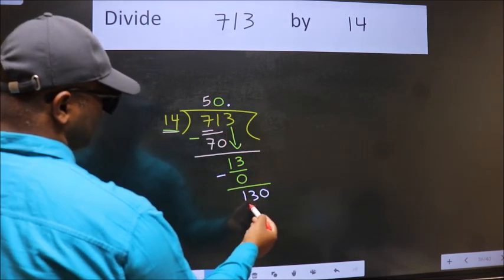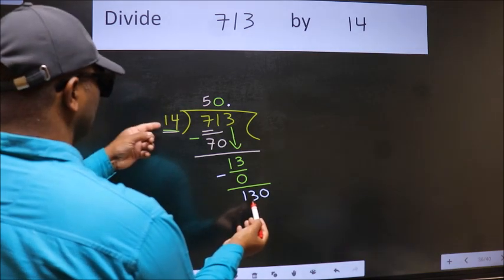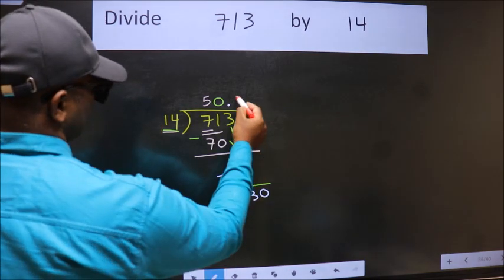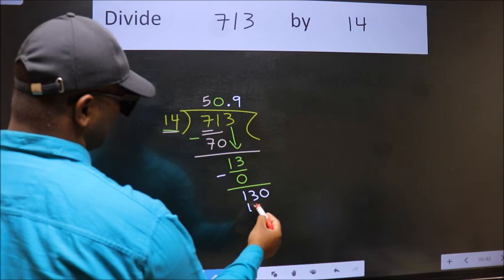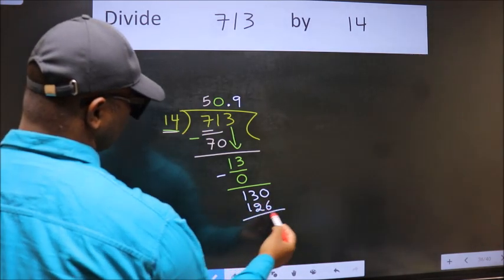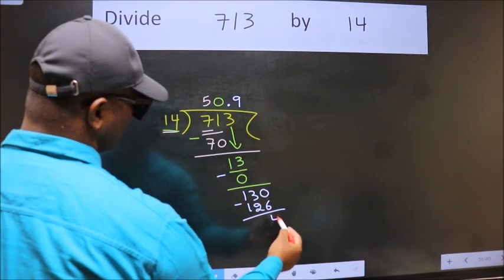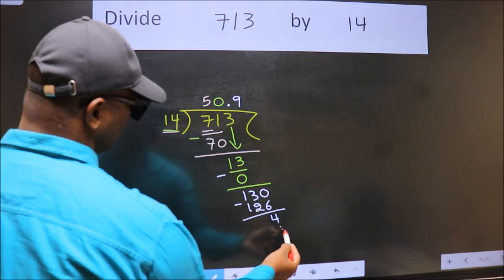So 130. A number close to 130 in 14 table is 14 nines, 126. Now we subtract. We get 4. And you continue the division. I am not doing that.